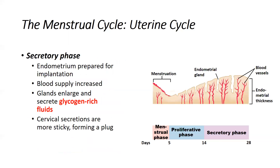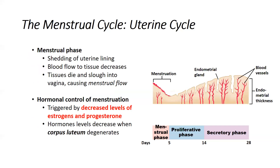The secretory phase of the menstrual cycle is where the endometrium prepares for implantation. Things get really tailored to pregnancy: increased blood vessels, enlarged glands, glycogen-rich secretions from those glands, and thickening of secretions forming the mucus plug. Basically, everything happening in the proliferative phase is amplified — really increasing the effort to produce and maintain a viable pregnancy.